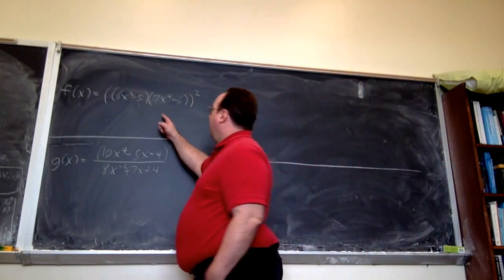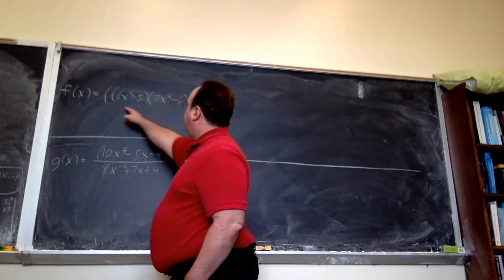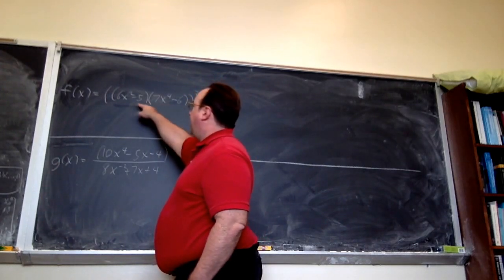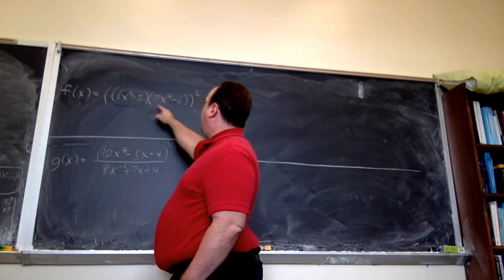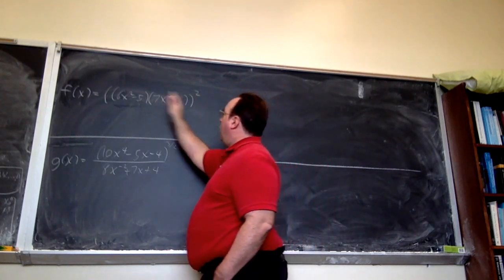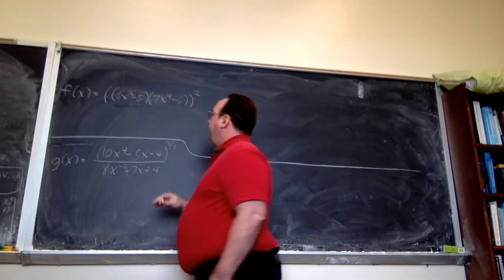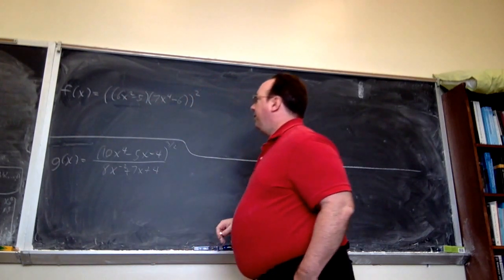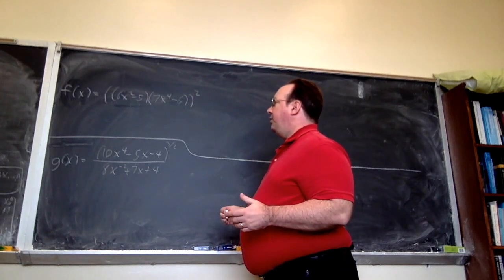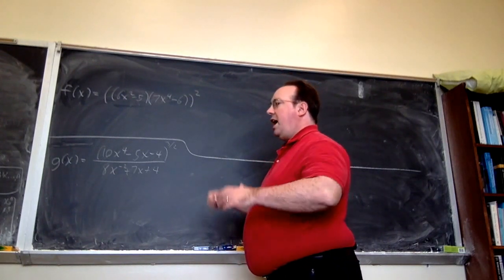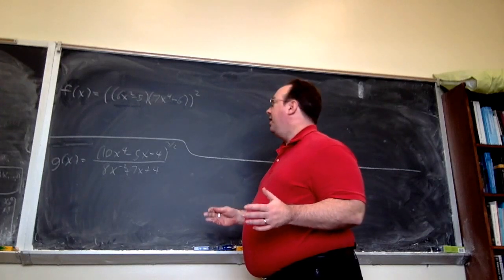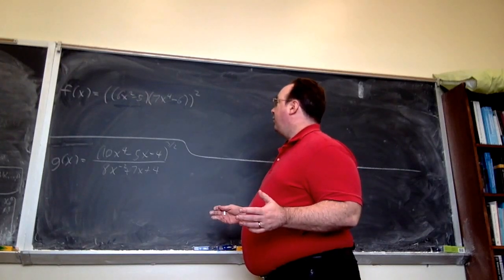Starting with the first one, we have this function as a product: (6x² − 5) times the quantity (7x⁴ − 6), but all of it is squared. When we compute a derivative, the first thing we have to take into account is the outermost function. In this case, the outermost operation is squaring.